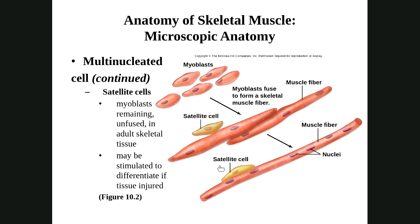Here's a view of myoblasts fusing together — two fused, three fused, and now we're getting our adult cell with multiple nuclei. There is a type of myoblast that never fuses though: satellite cells. Myoblasts that are unfused are important for growth and repair. They may be stimulated to differentiate if tissue is injured — for repair, but also whenever you make your muscles larger, you're actually injuring them to build them bigger. So satellite cells are important both when you work out to build muscle and when you damage a muscle and need to fix it.